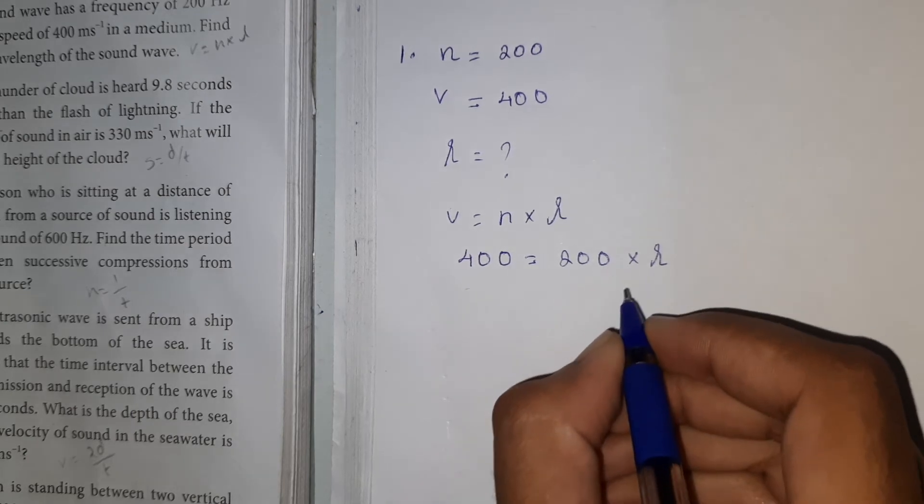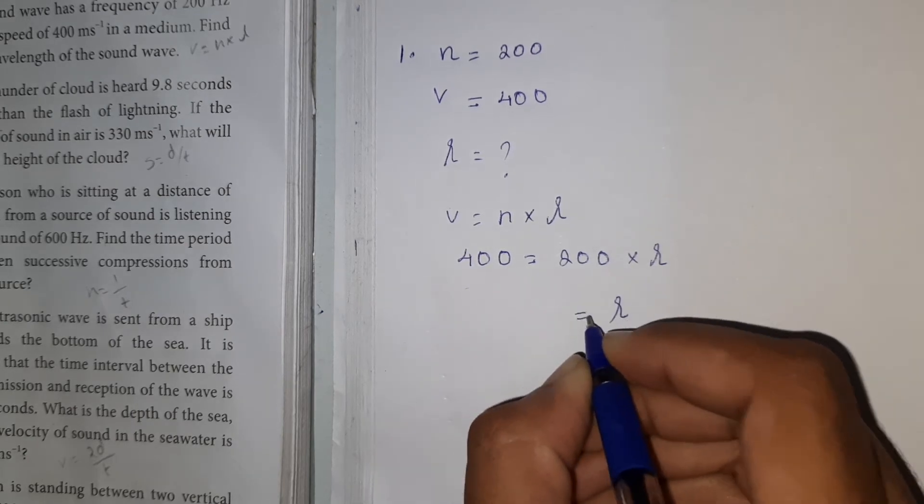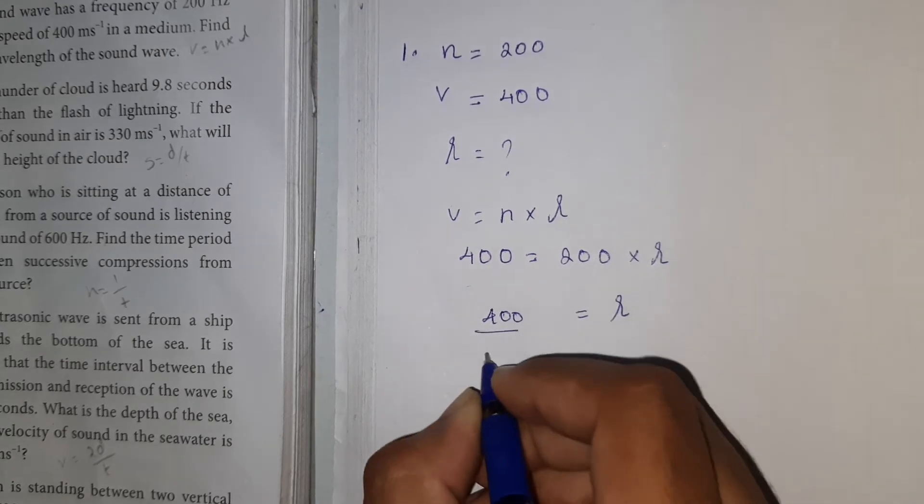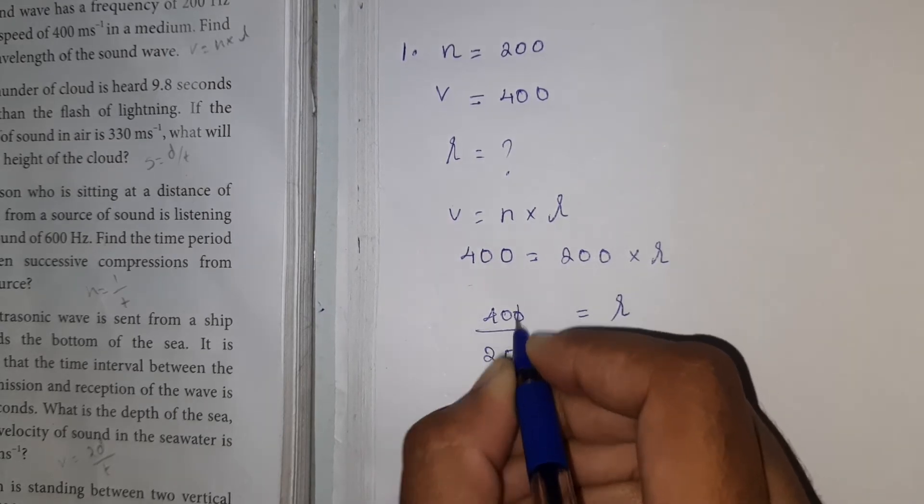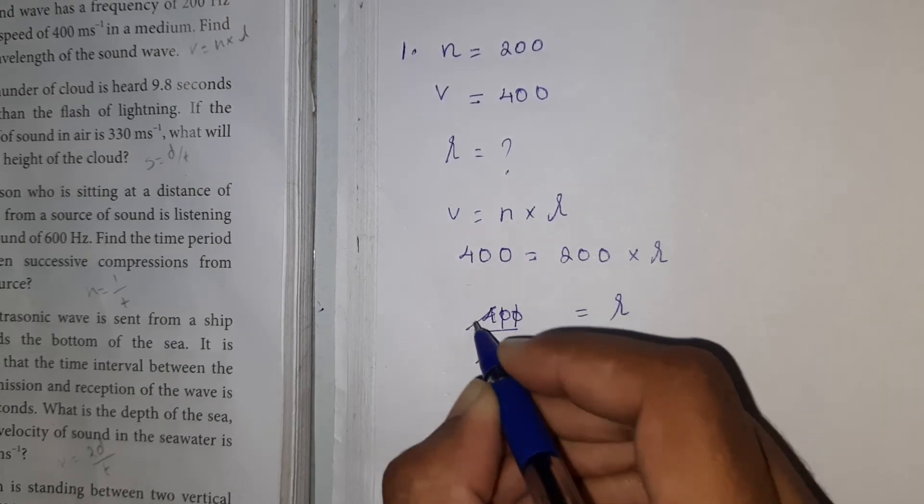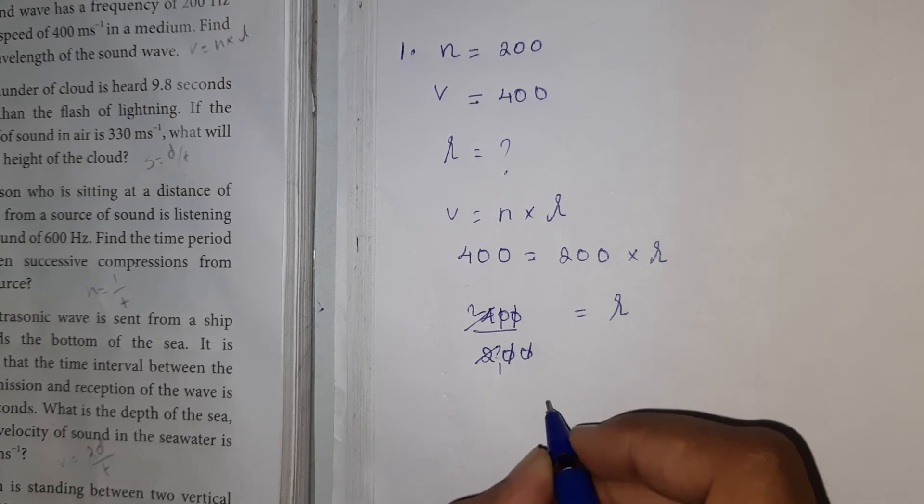Lambda is on one side, so λ = 400 ÷ 200. Cancel the two zeros: 400 and 200, so lambda equals 2.